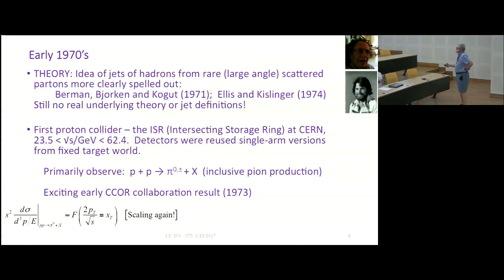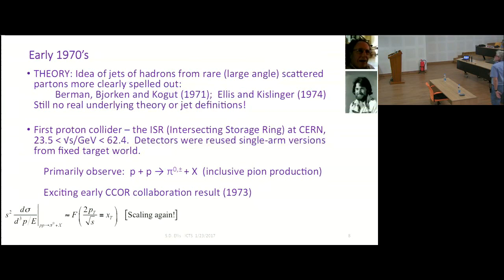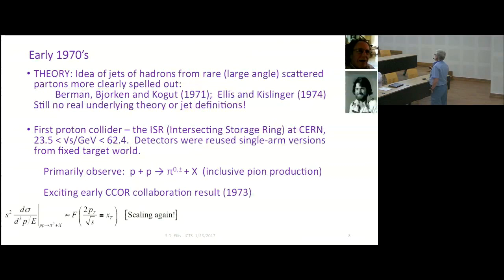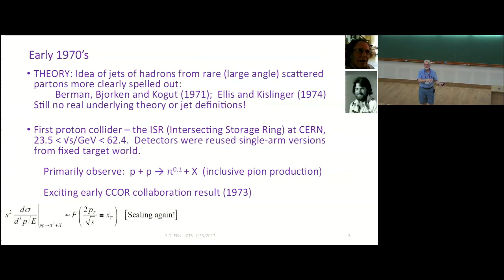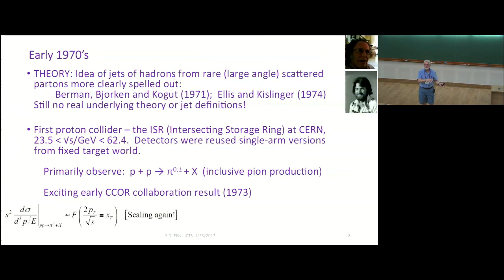There was the first proton collider at your institutions, called the intersecting storage rings. Now, it wasn't really an accelerator, it was a storage ring, but it was in a circle, and the protons came around and collided at energies substantially larger. Before that, tens of GeV. Now, suddenly, we got up to 50. On the other hand, the detector technology wasn't up to it.